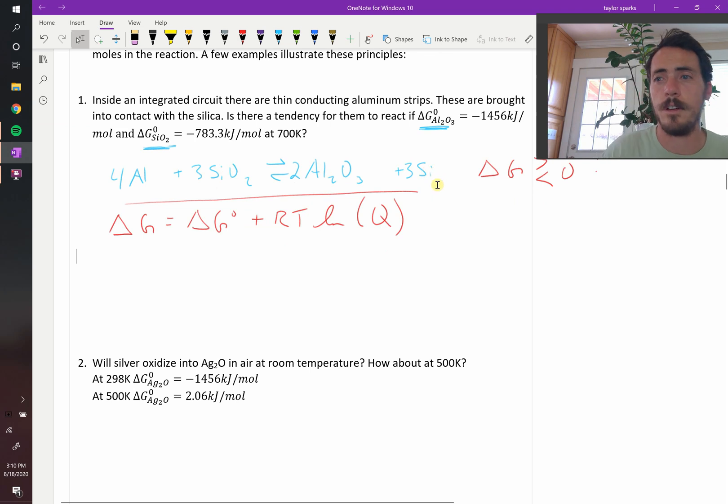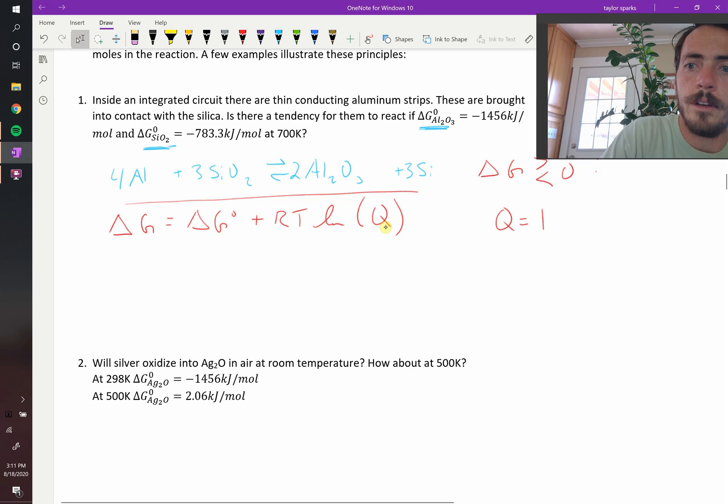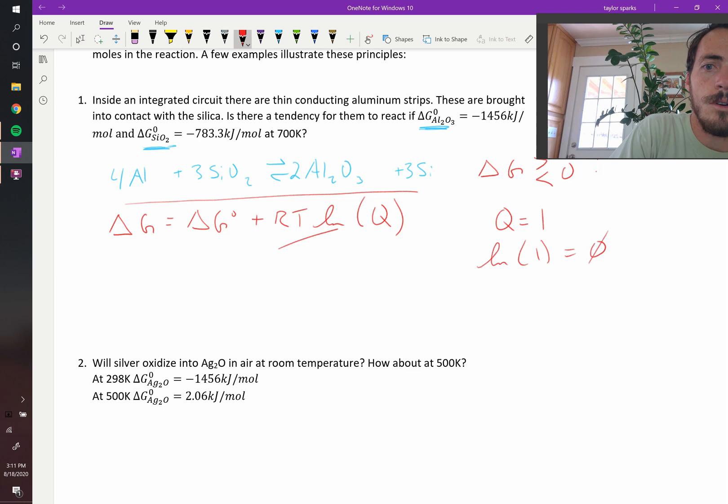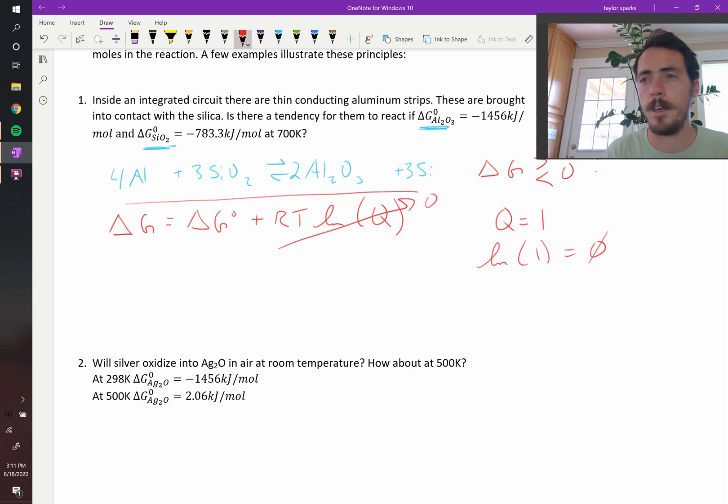The aluminum, the silica, the alumina, and the silicon, those are all solids. Therefore Q is just equal to one, and the natural log of one is just equal to zero. So this whole term goes away. Now what is delta G naught? What's the change in free energy under standard conditions?